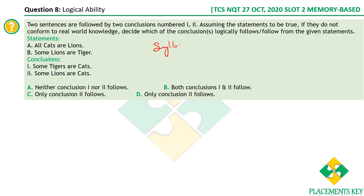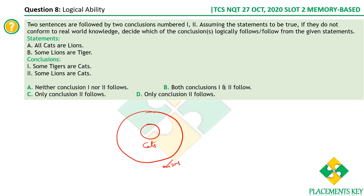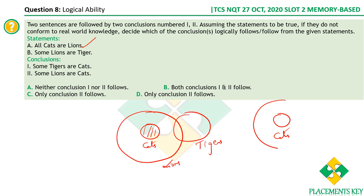Next is a syllogism-based question, solved using Venn diagrams. The statements are: all cats are lions, and some lions are tigers. Even if these deviate from reality, we must assume they're correct. For 'all cats are lions,' the entire cats region is within lions. For 'some lions are tigers,' there are different possibilities — tigers may or may not intersect with cats.